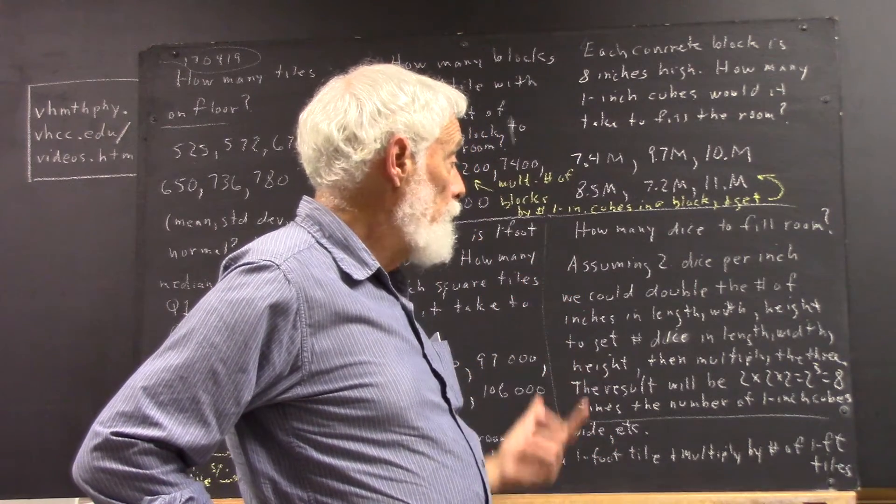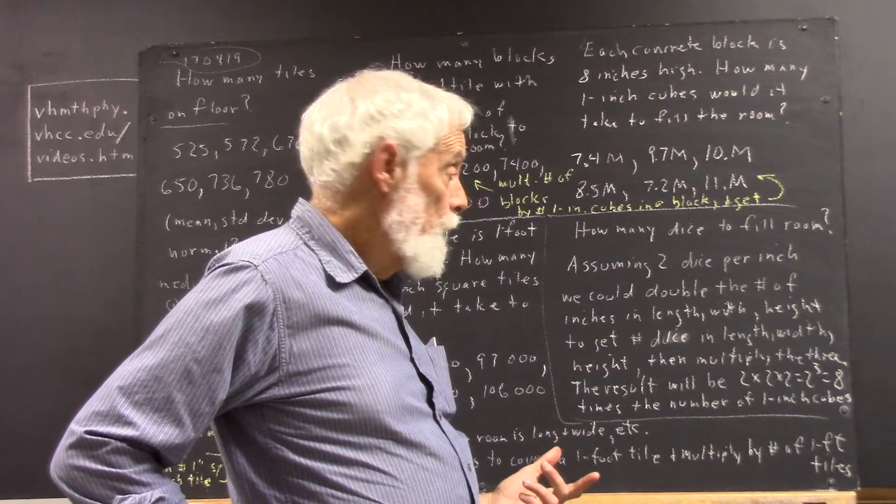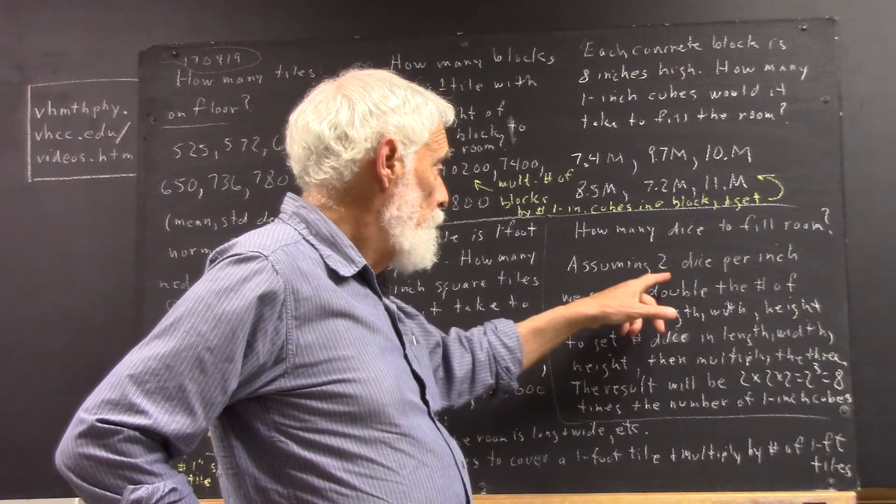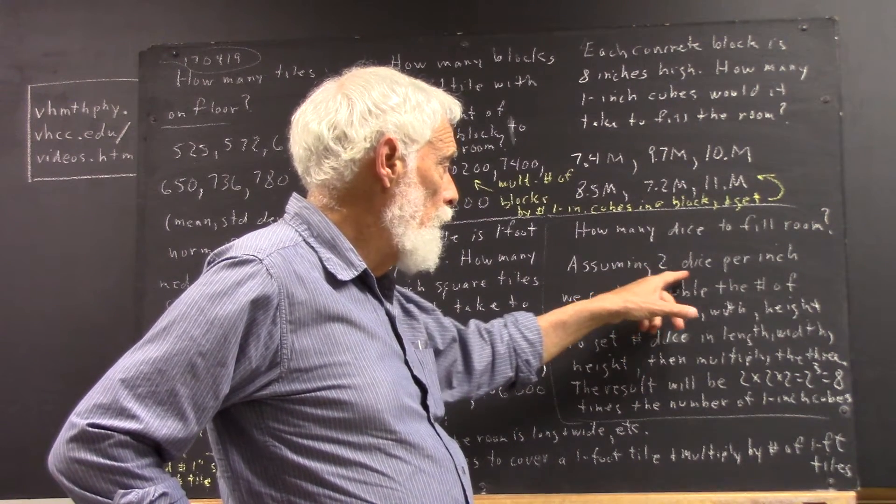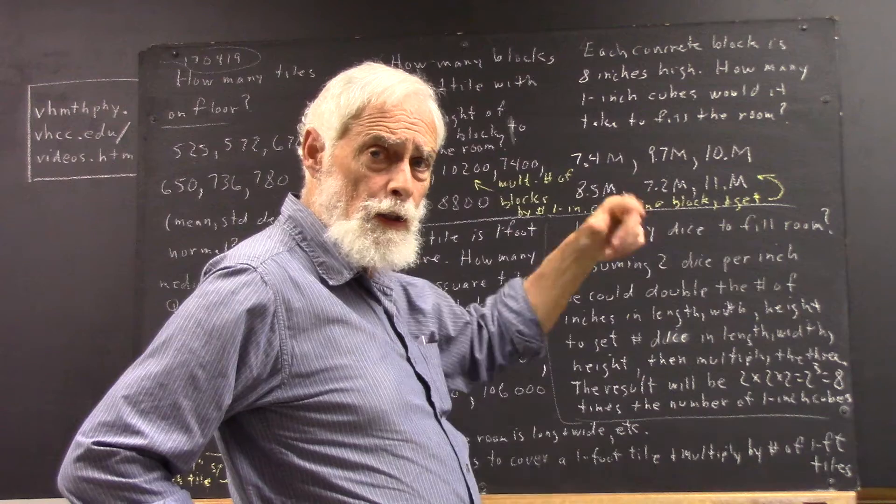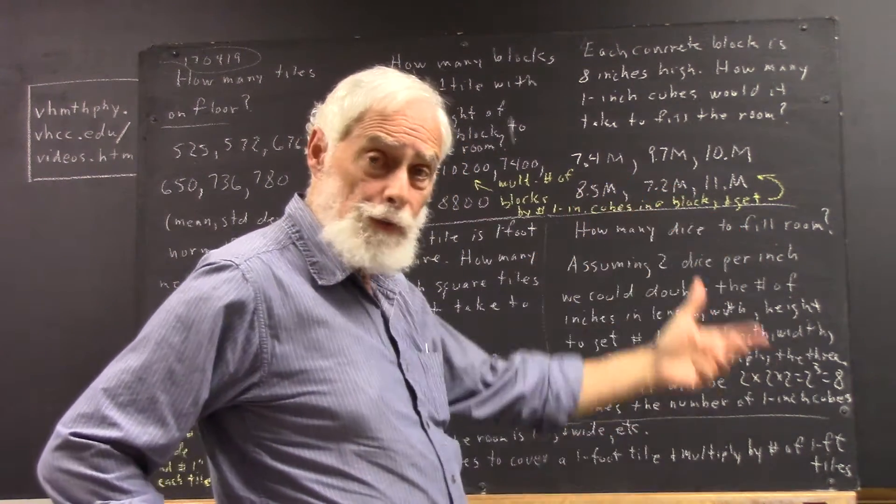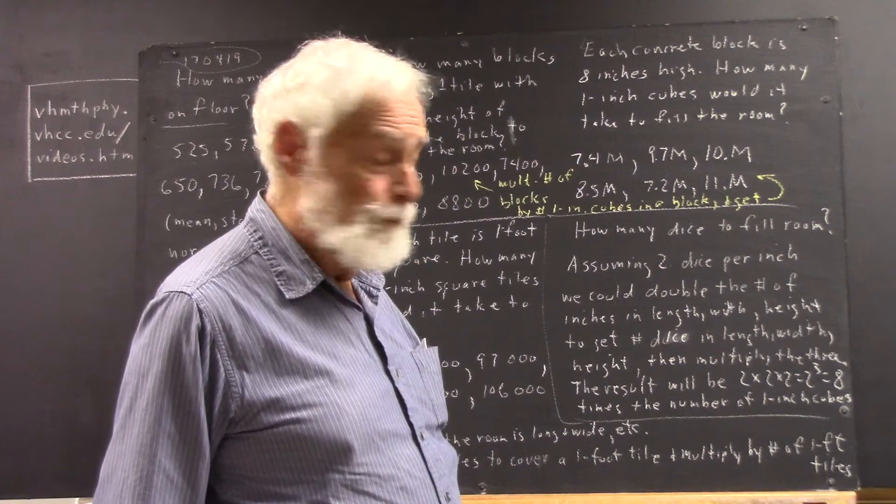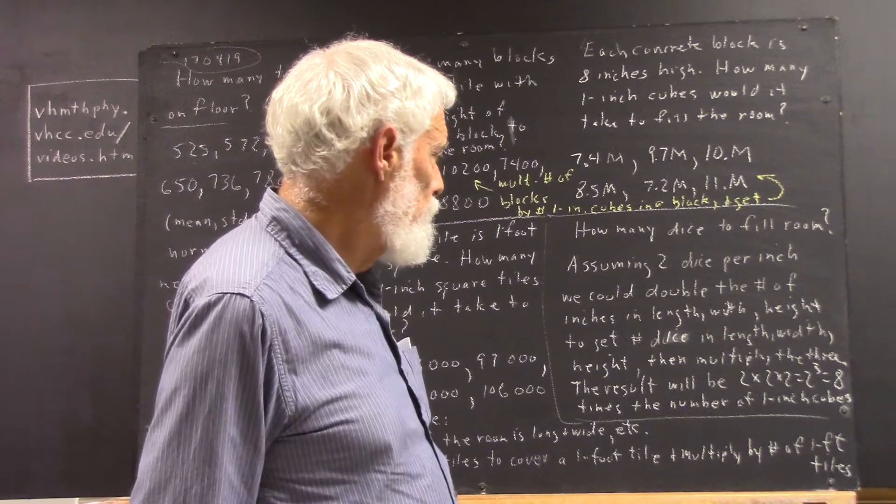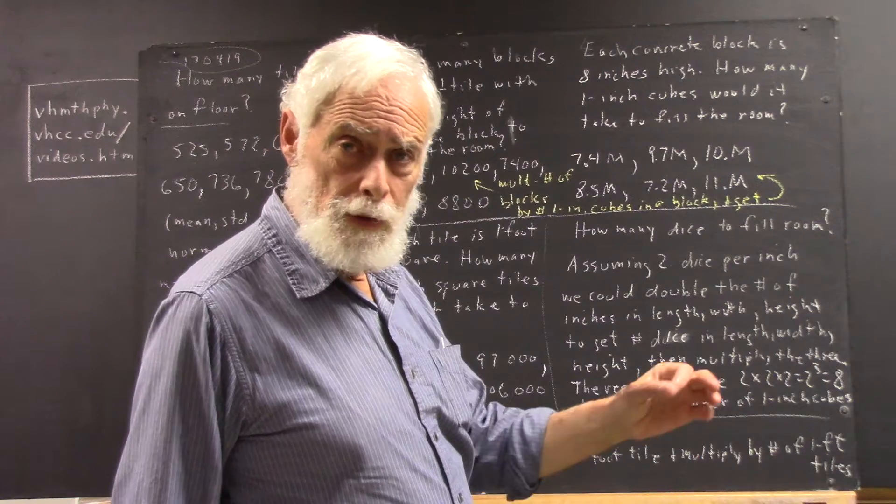Okay, if there are two dice per inch, well the first thought is, if there are two dice per inch and this is how many there are with one-inch cubes, then we just double this number and that's how many dice it would take. Well, that doesn't quite work, and maybe you want to stop and think for a minute why before I tell you.